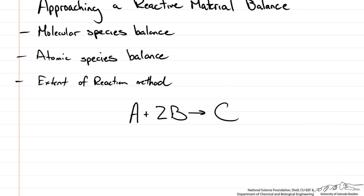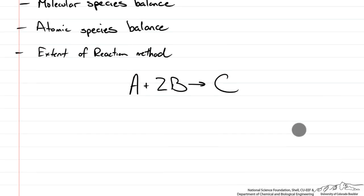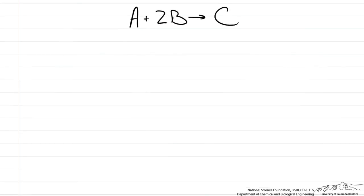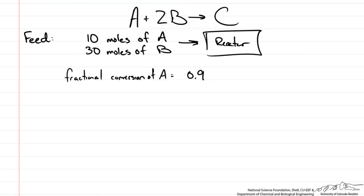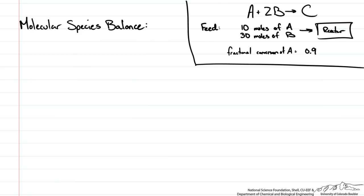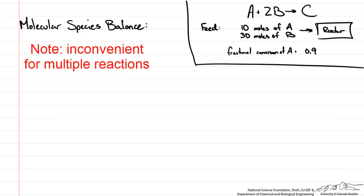We will have the reaction A plus 2B goes to C. We will feed 10 moles of A and 30 moles of B into our reactor. One piece of information we are going to need is that the fractional conversion of A is 0.9. Given this information let's go through each method and we will start with the molecular species balance.